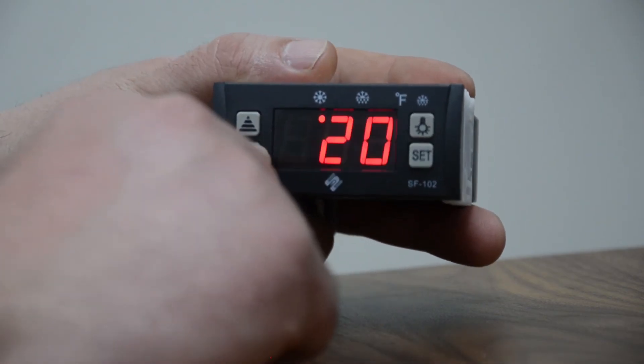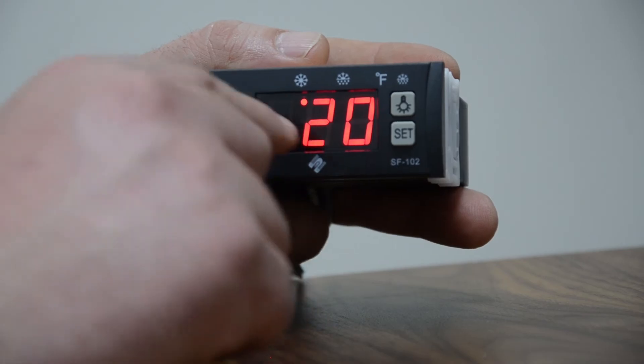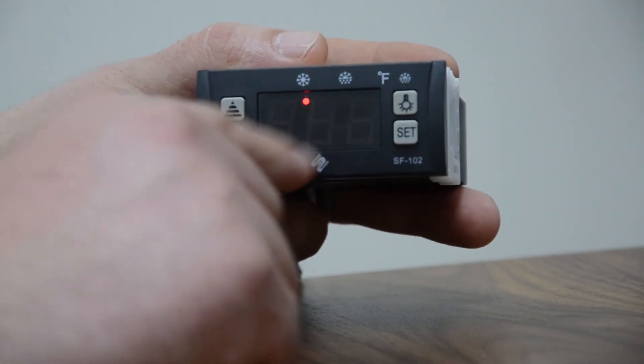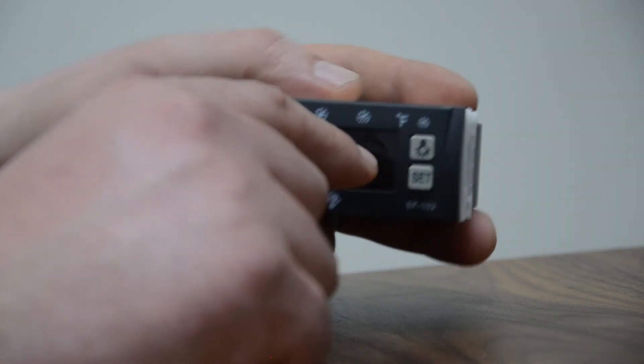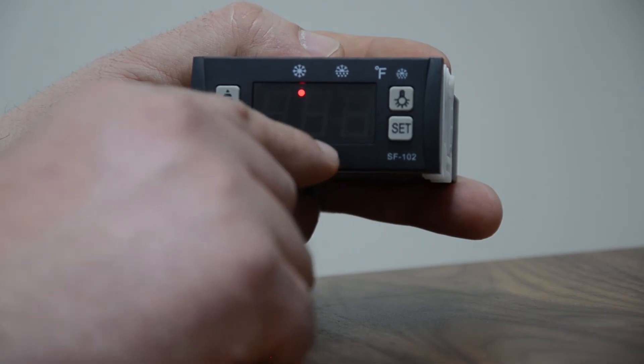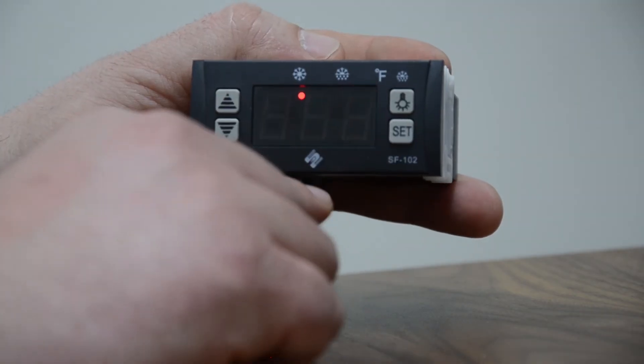F1 is the max defrost duration. We set normally for 20 minutes, which it's set for. 20 to 25 minutes is preferred. The reason why the longer you want is because you want to make sure that all the ice that's built up in the evaporator is gone, so it doesn't ruin the compressor.